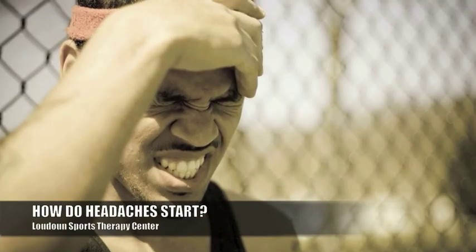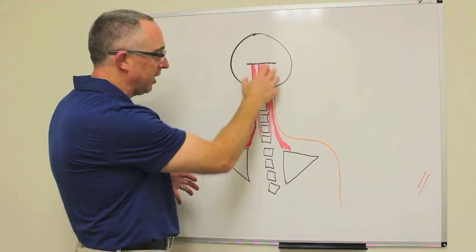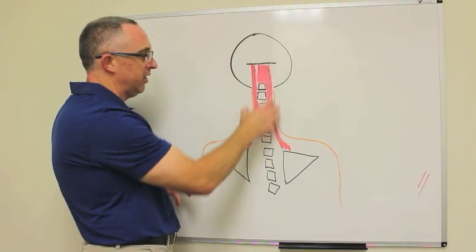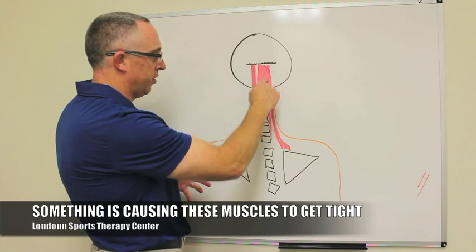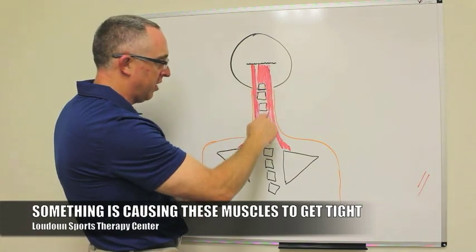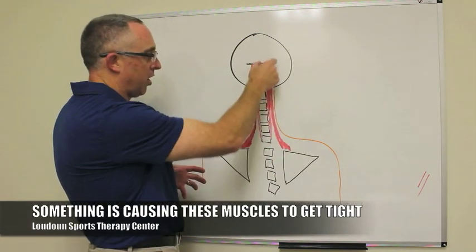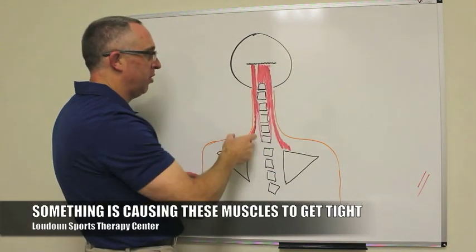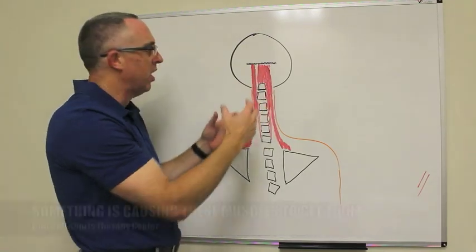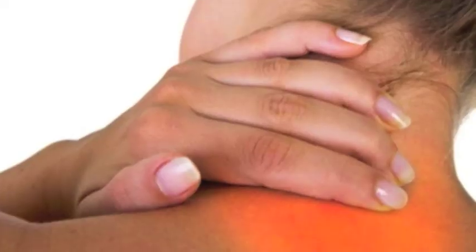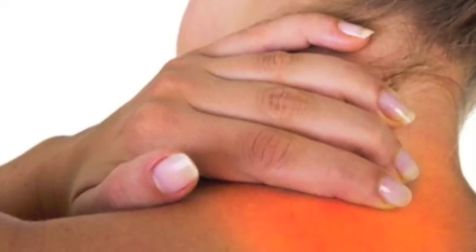What happens in a headache issue is that something is causing these muscles — one or all of these muscles. There would be seven muscles that come to each of these vertebrae, and two muscles coming from each shoulder blade up into your neck. So there are a lot of muscles. What's happening is that something is causing those muscles to get tight, to get tense.